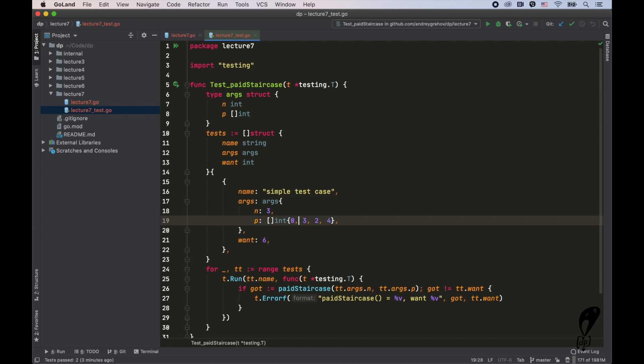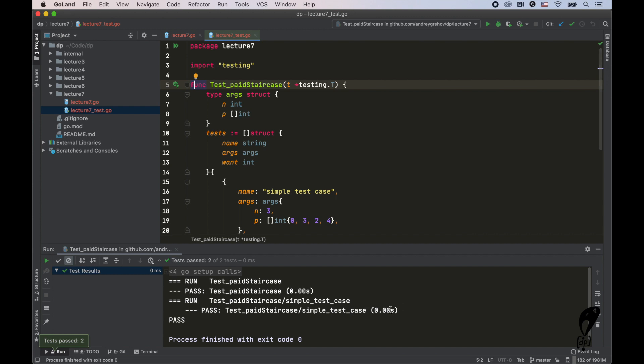So n equals to three. And then to step on the first stair costs three dollars, then two dollars for the second one, and four dollars for the last one. And we want six dollars back. Awesome. So the test is green, meaning everything is good.